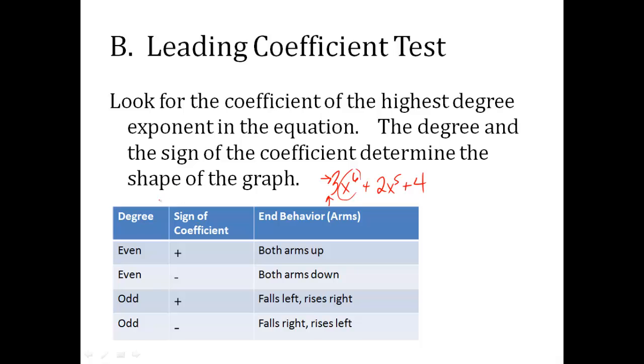This first column is about the degree. So I first look at the degree. It's even. So I know it's even. That 3 is a positive number, so I know it's positive, which means both arms are going to go up. So it is going to look like a happy face. If that 3 had been negative, then I would know that both arms would go down. It would be a frowny face.